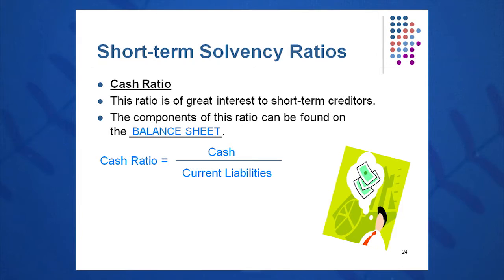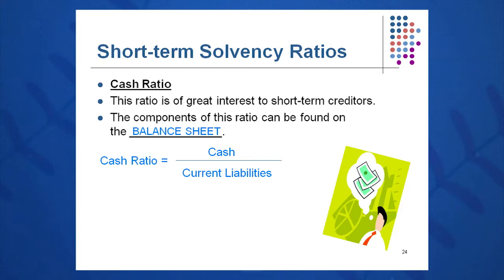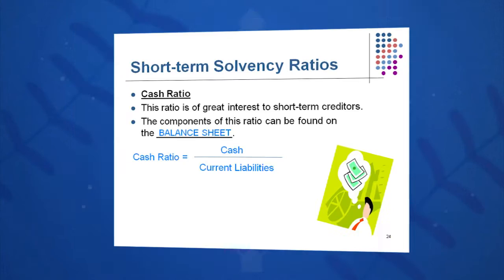The cash ratio is less commonly used, but very important in certain companies. It's cash divided by current liabilities. It looks at our ability to pay bills — do we have enough cash to pay our short-term liabilities rapidly? All of these numbers come right off the balance sheet.